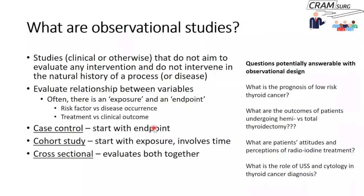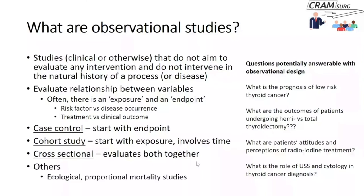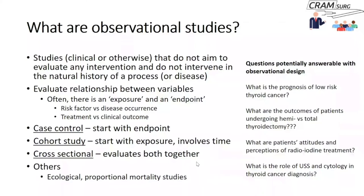There are three main types of observational studies. In case-control studies, you start off with the endpoint and look back to see where exposures occurred — starting with healthy people and people with the disease, then examining what kind of exposure each group had. Cohort studies start with the exposure to a risk factor or treatment and follow patients over time to see if the endpoint or outcome occurs. Cross-sectional studies evaluate both the endpoint and the exposure together at a single point in time. There are also ecological studies and proportional mortality studies.